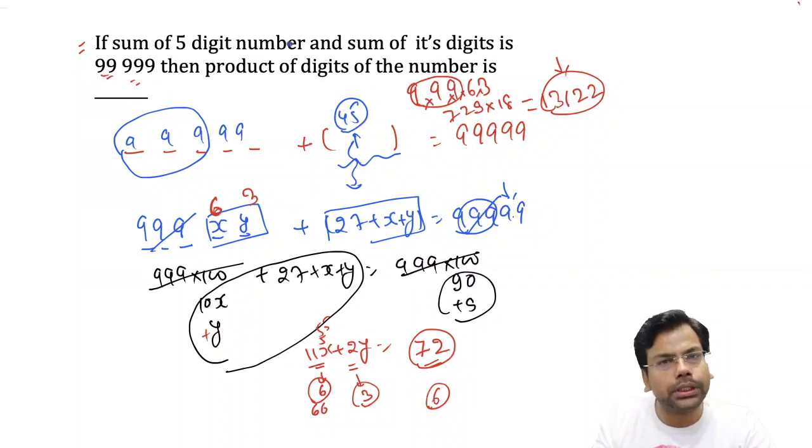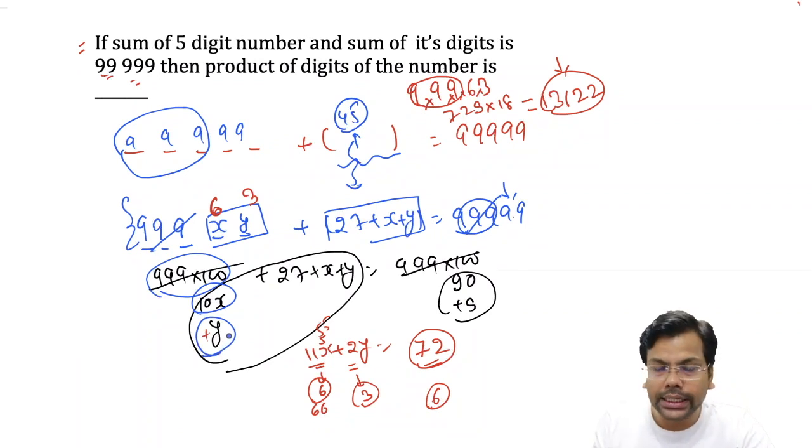So whenever you have numbers and the sum of digits, we work on the formation of number. These terms are called formation of number. So I hope this one is clear. If this is clear, then I got this question.